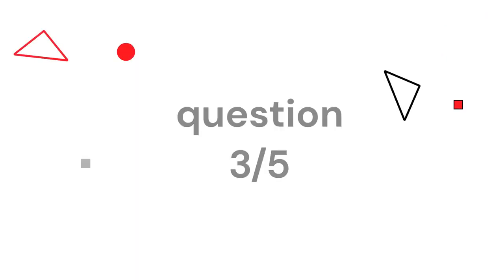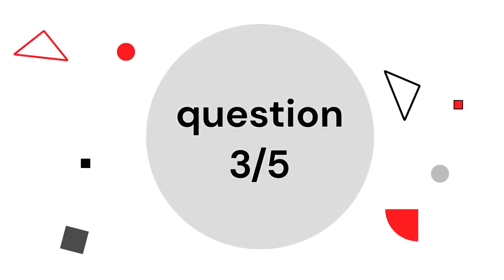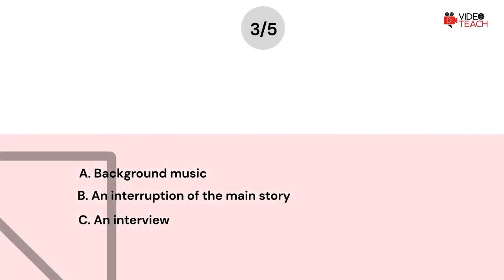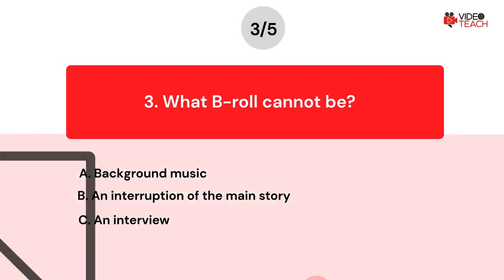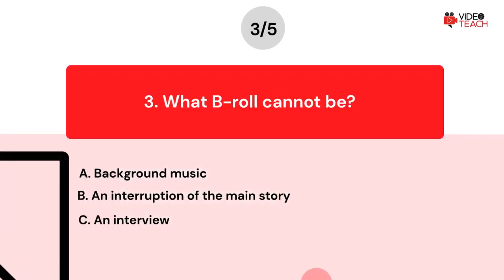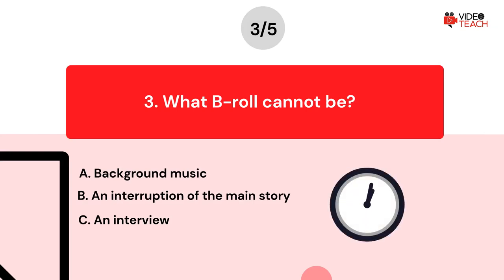Question number three: What can B-Roll not be? Option A: Background music. Option B: An interruption of the main story. Option C: An interview. Now you have about 15 seconds to think about your answer.